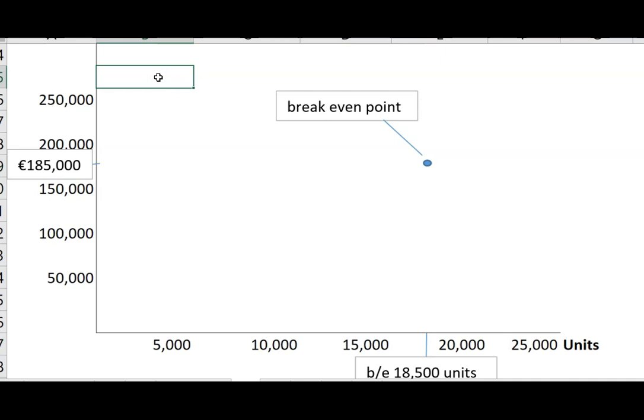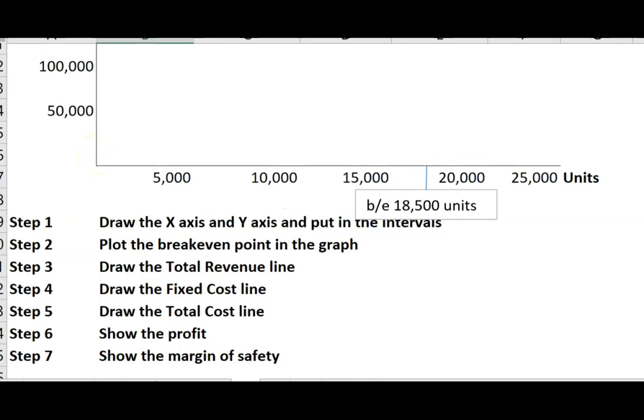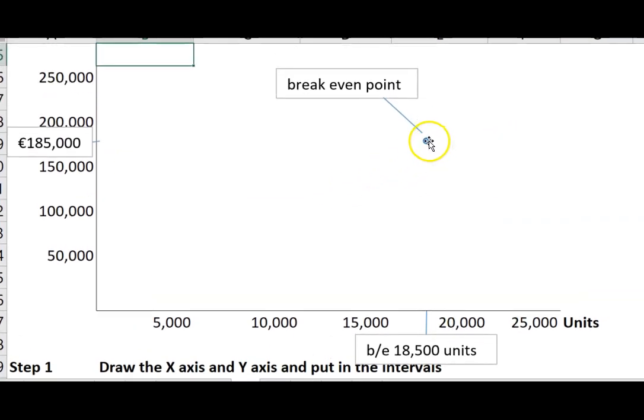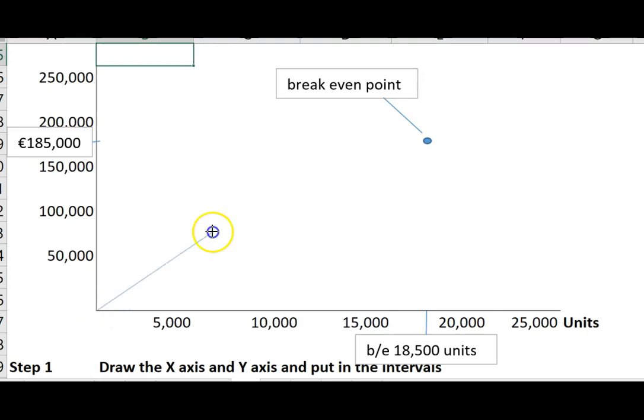After that, you can do everything else fairly quickly. It doesn't really matter the order. The total revenue line starts at zero and goes through at some point our revenue will hit the breakeven point. So we just insert a line starting here. That is revenue.